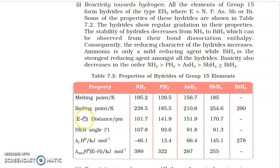Next, we come to E-H distance, i.e., bond length. If you look at N-H, P-H, As-H, Sb-H bond lengths, they are increasing. The reason: as we go down the group, the size of the central atom increases, so bond length increases.